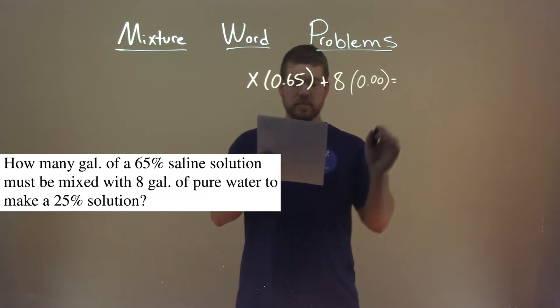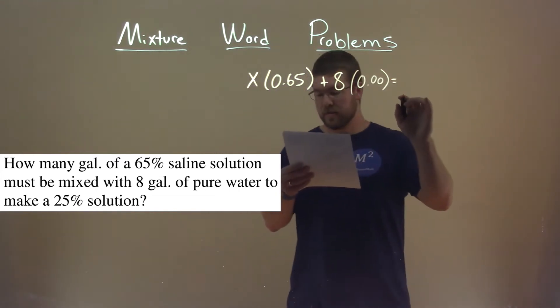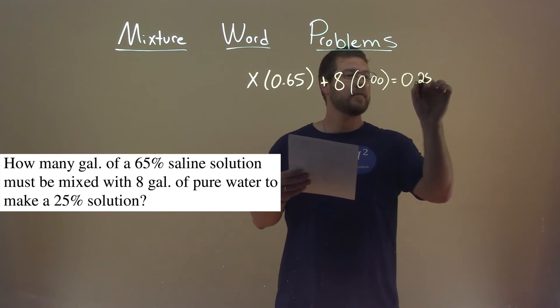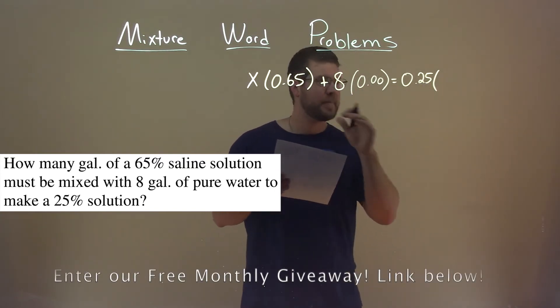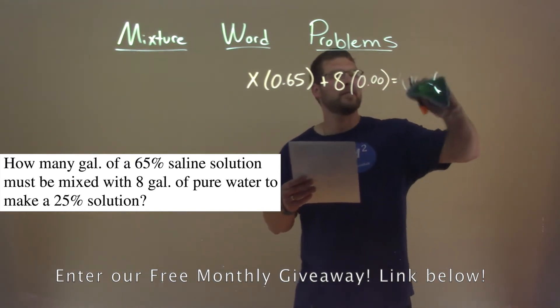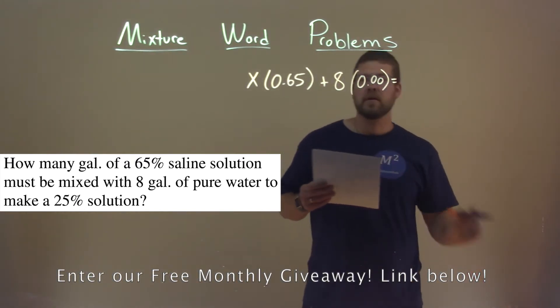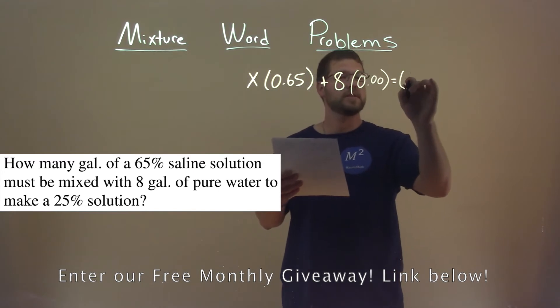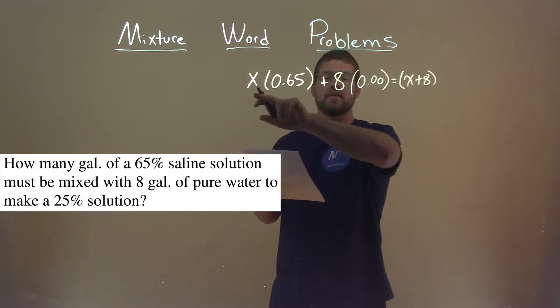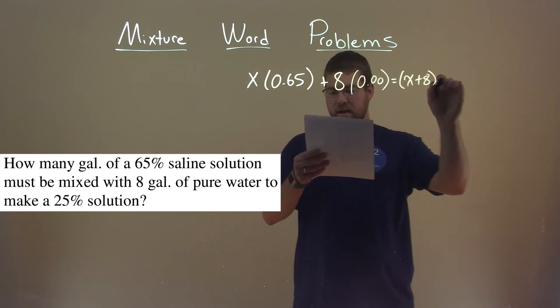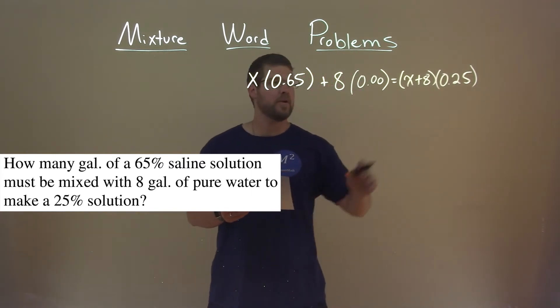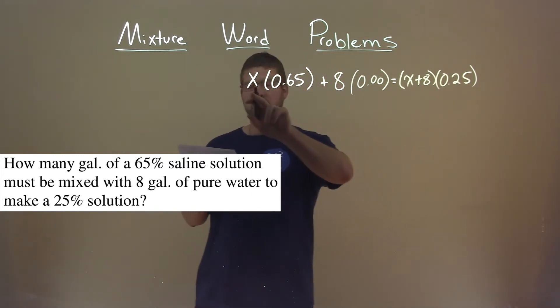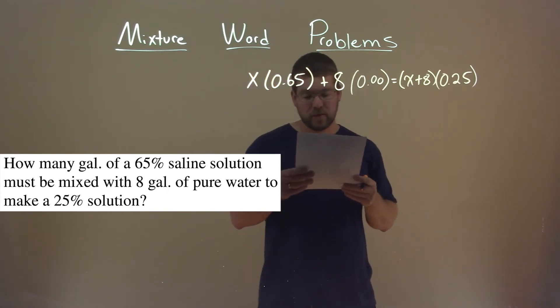And that should equal, they tell us, a 25% solution. So, 0.25 times how many gallons? I guess I mixed it around, but it's alright. I'll write it this way so you can see it better. The total number of gallons, which is X plus 8, because we don't know what that X is, times a 25% solution. Okay, so the final is a 25%, but we don't know the number of final gallons, and therefore the first gallons of the saline solution.